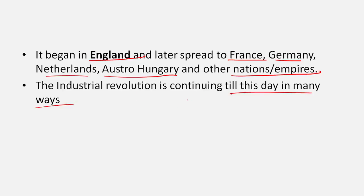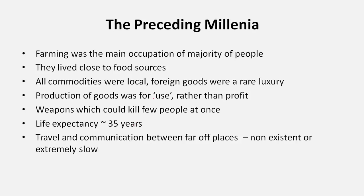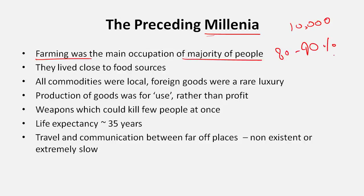This Industrial Revolution is continuing to this day in many ways, and I will discuss the different phases of it. In the preceding 10,000 years since agriculture began, farming was the main occupation of the majority of people — about 80 to 90 percent of the human population. If you did not farm, you did not have anything to eat.